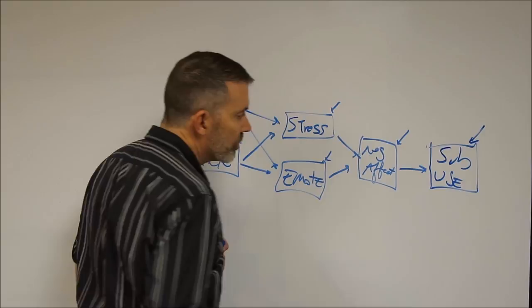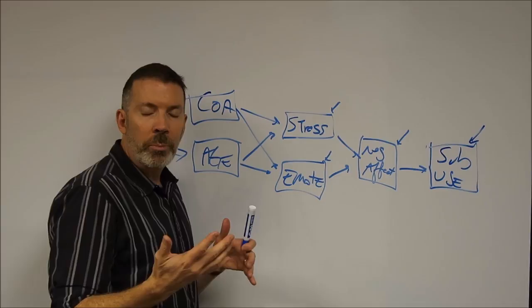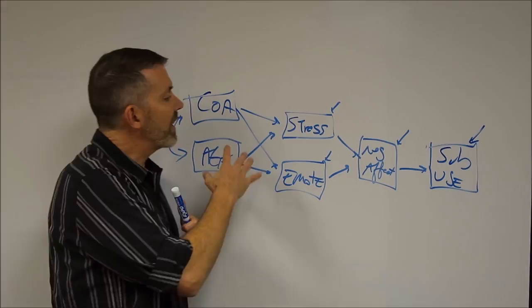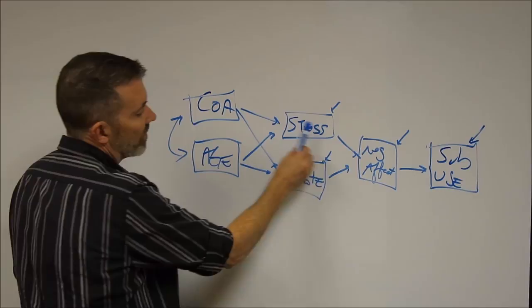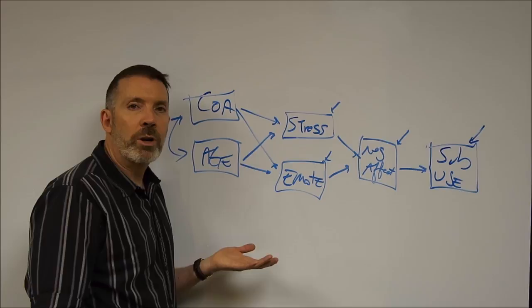There's a very famous paper by Baron and Kenny from 1986 that lays out the definition of mediation and moderation. Mediation is a variable or multiple variables that explain the relation between a predictor and an outcome. That's what we have here: why is COA related to substance use? Because it affects stress and negative affect, and because it affects emotionality and negative affect. There are significant changes here with respect to the multiple regression model, even though we're using exactly the same data and the same measures.